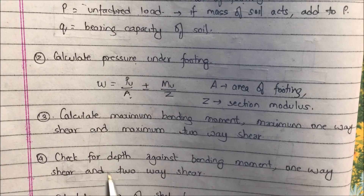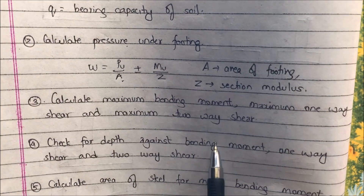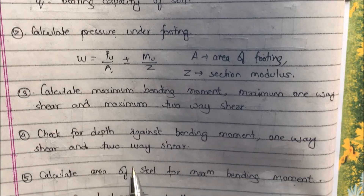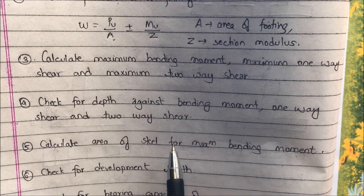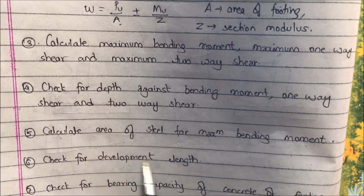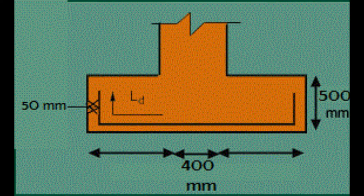Another step is to check the depth against bending moment, one-way shear, and two-way shear. The depth should be sufficient to resist all these. Step 5: calculate the area of steel for the maximum bending moment and check for development length. LD represents the development length, which is required to transfer the stress from the steel to the concrete without any failure.